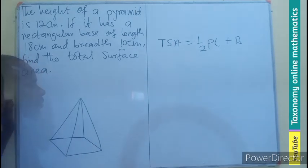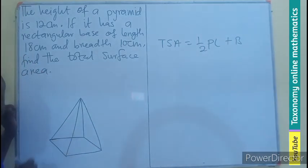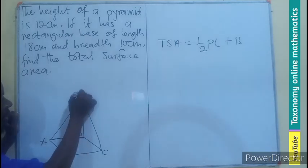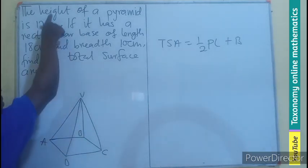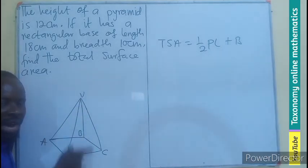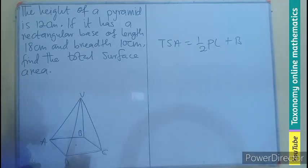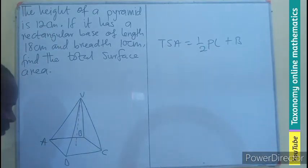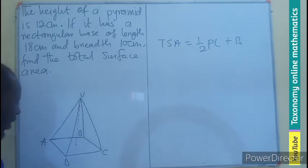Let's make a sketch of our pyramid. Let's label the vertices A, B, C, D. We have been given the height — in this case, the height is not the slant height but the altitude, which goes from the apex down to the center of the base. This height is labeled as 12 centimeters. Now we also need to find the slant height.